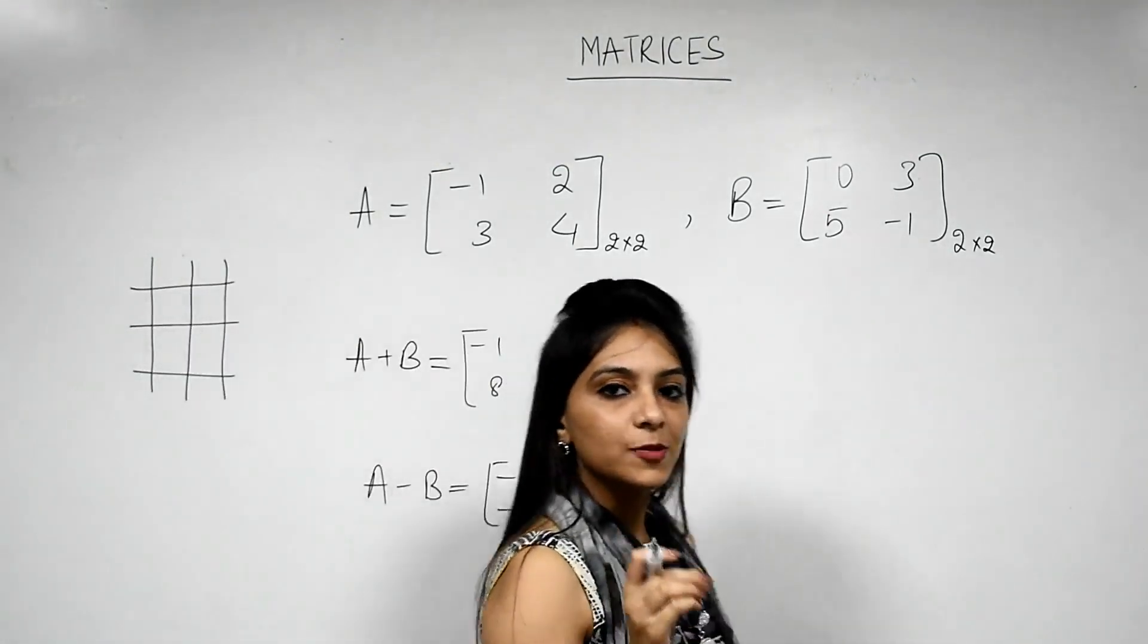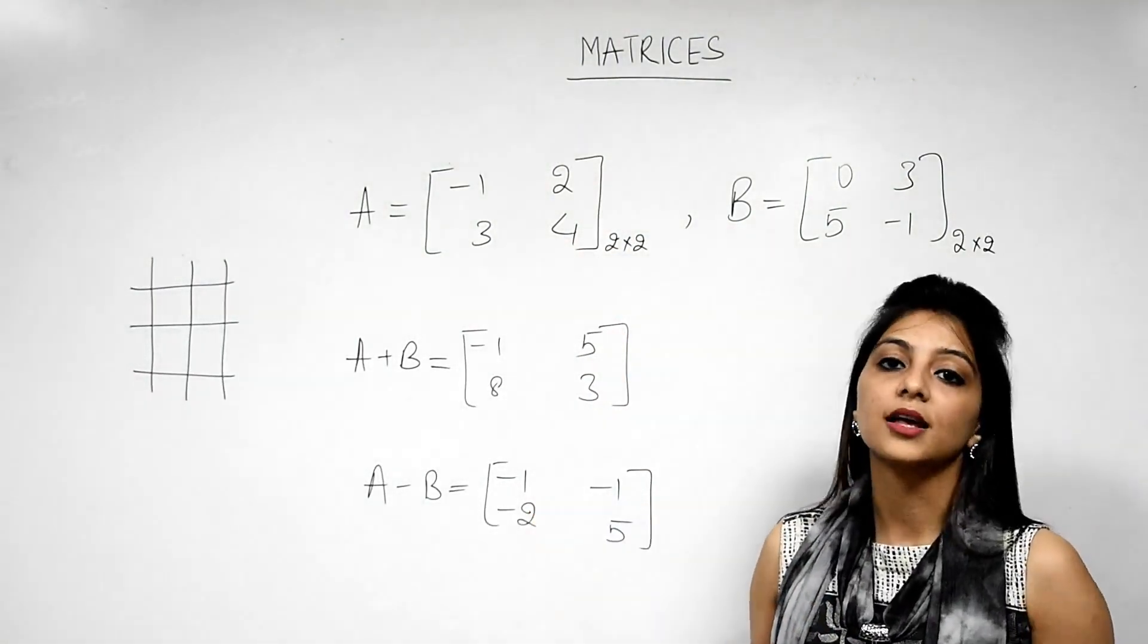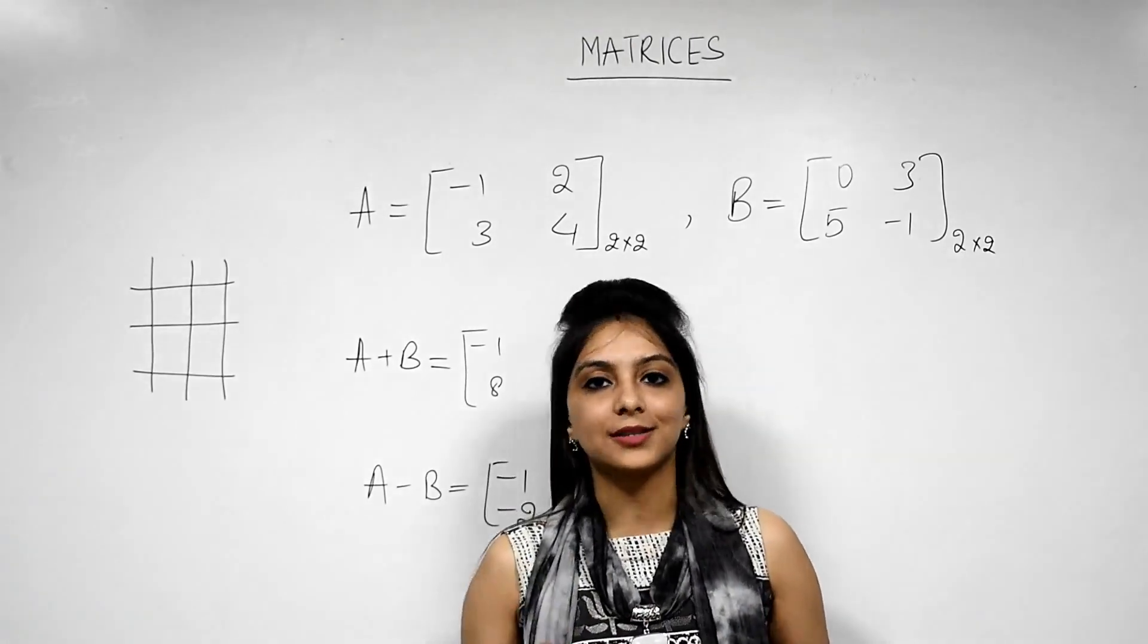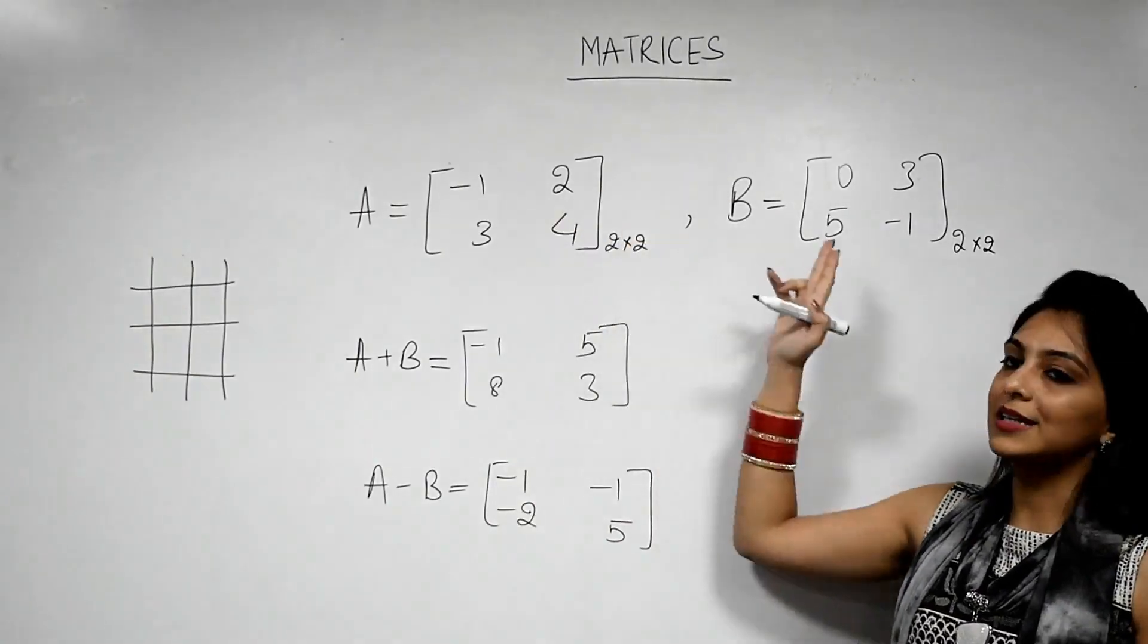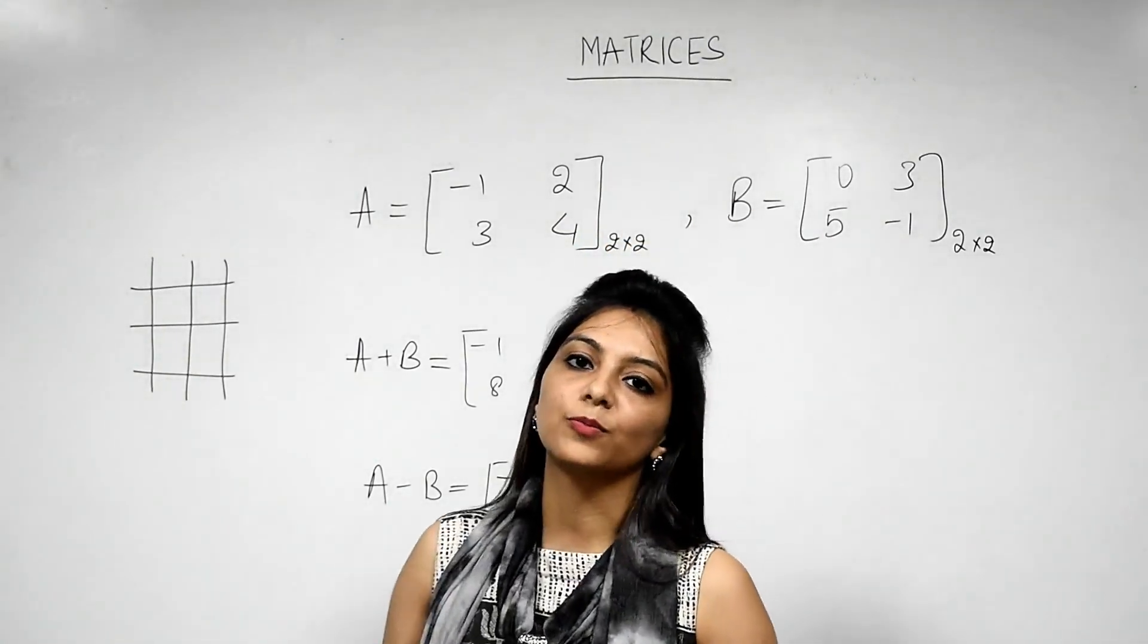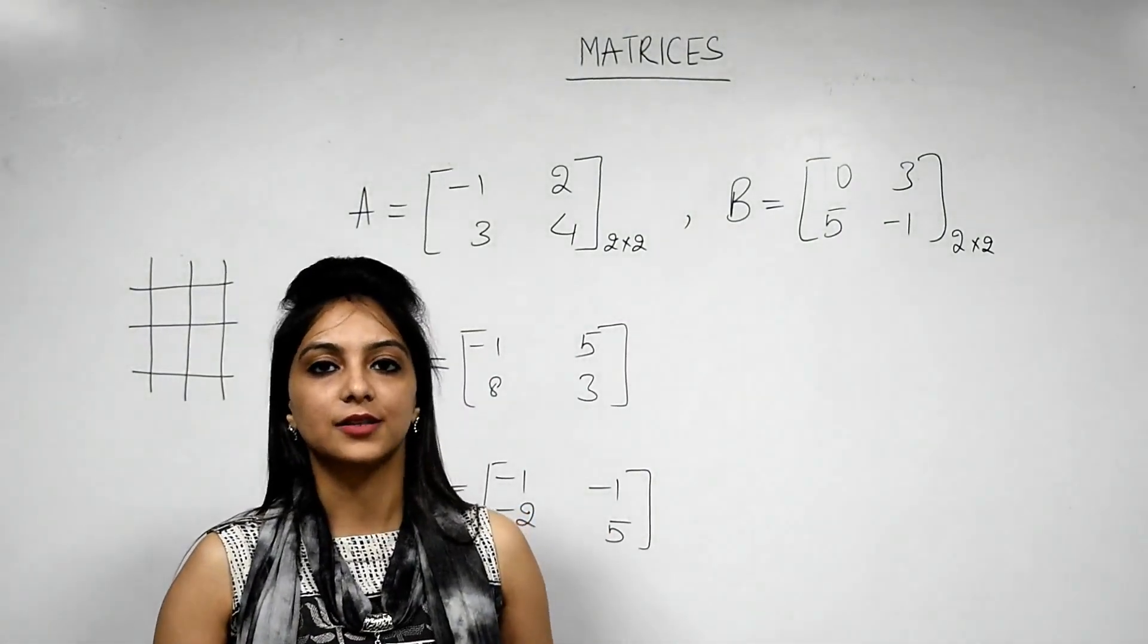So always remember irrespective of the fact whether it is a square matrix or a rectangle matrix, we can add or subtract two matrices only if their order is same. So this condition you have to remember. Then the next step is just add or subtract the corresponding elements. That's it about addition and subtraction. Now in the next class we will learn about multiplication of matrices. Thank you.